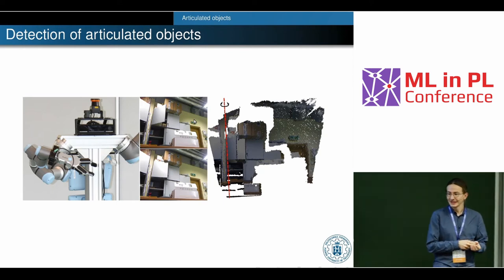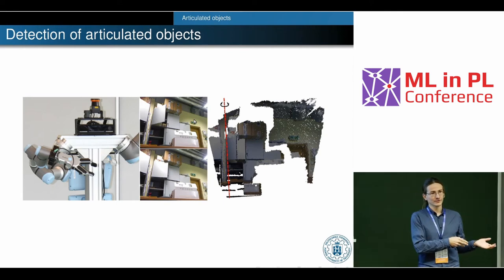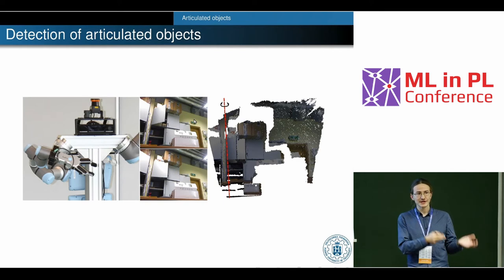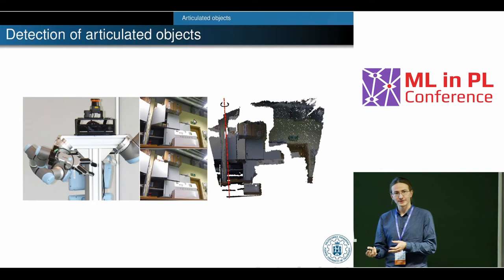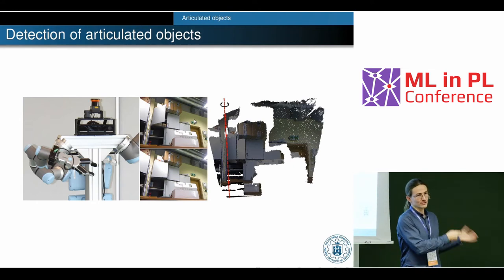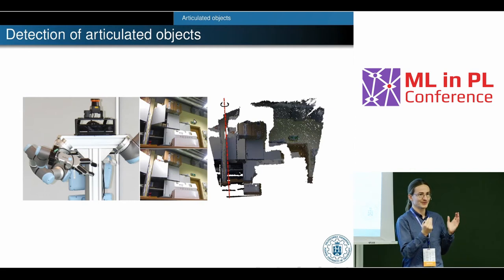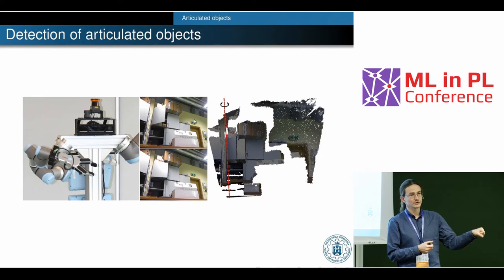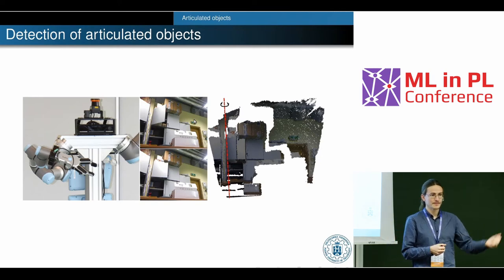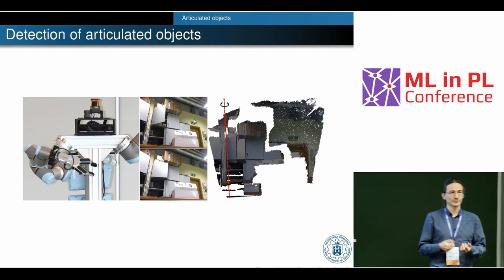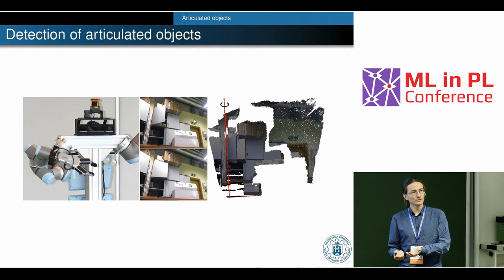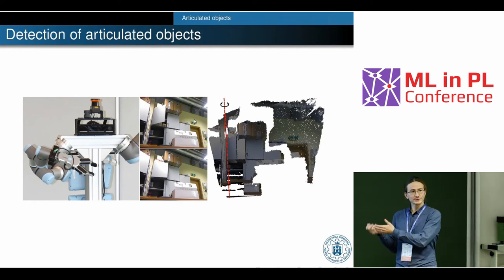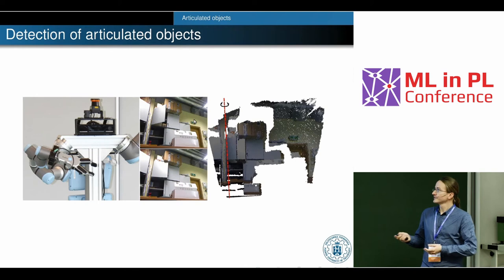The third example is about articulated objects. In standard navigation, all objects are treated as obstacles — doors, humans, walls — and the robot just avoids them. But in practice there are objects like doors that the robot can open to pass through. So the robot should be able to detect those kinds of obstacles and know how to interact with them. The goal of this research is to detect articulated objects like doors and estimate the parameters of their joints.